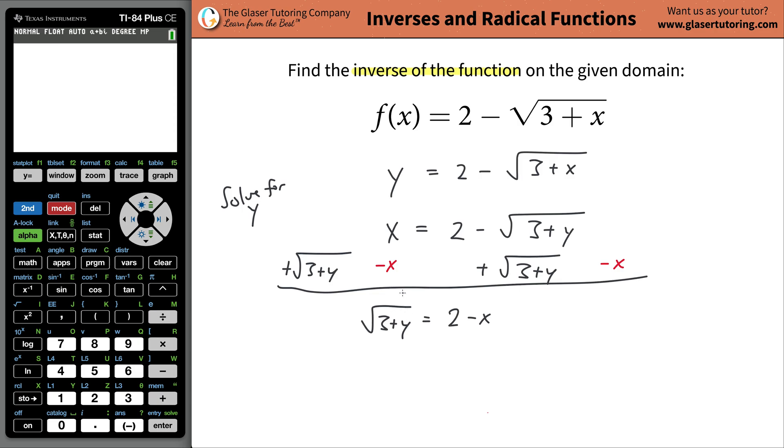Now what I need to do is get rid of this square root because I got to find what y is. So I'm going to now square both sides. So you square the left. And if you square the left, you got to square the right.